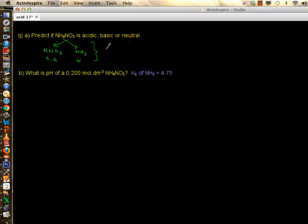It's an acidic salt with pH less than 7. Now the question continues. This is a bit annoying calculation, but let's look at it. What is pH of a 0.2 mole per decimeter cubed solution of ammonium nitrate? They give me another piece of information, which is pKb of ammonia is given to be 4.75.